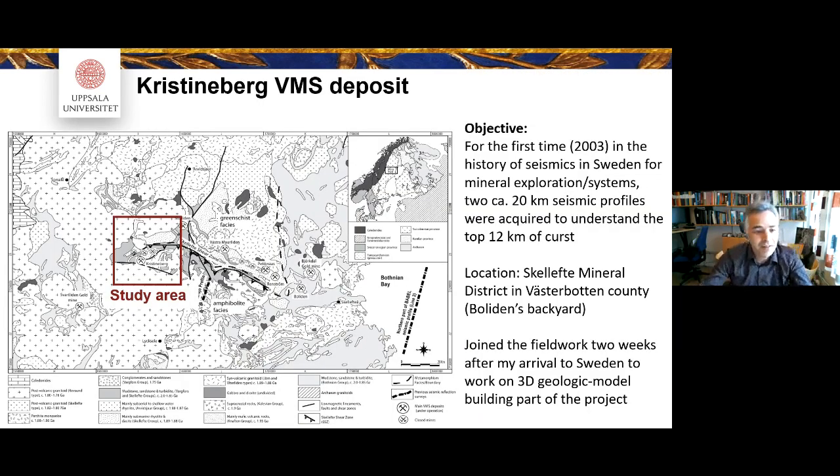The very first data set I'm going to take you to is from northern Sweden. It's called Skellefte Mineral District. This is the backyard of a very major Swedish company called Boliden. These are some of the closed and operating mines. Kristineberg is currently one of the operating mines underground. It's a VMS, a massive sulfide. I think at the time, 2003, for the first time as far as I know, that we acquired two long reflection profiles to look into the crust, 12km top of the crust, to see what's going on and if we could find any relationship between the structures and the mineralization.